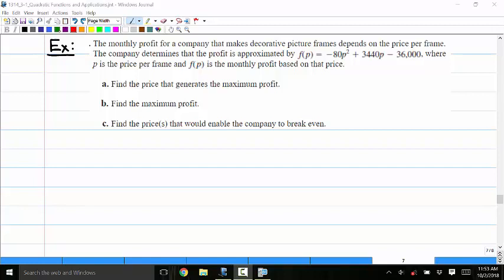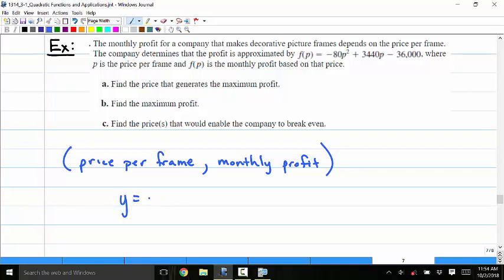Okay, so we have price per frame is our little p, that's our x value, and our y value is the monthly profit. That's our x comma y. And our function is given by y equals negative 80 x squared plus 3440x minus 36,000.